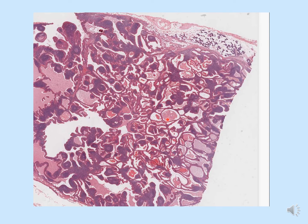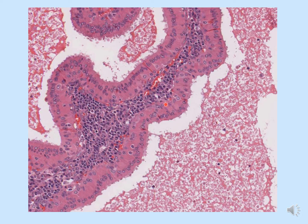Zooming in further, you can see the cystic spaces with empty space visible. Inside the cystic space is the eosinophilic coagulum, lined by the double-layer papillary cystic structures. These are aligned by the oncocytic epithelium and lymphoid stroma in between. The epithelial component consists of inner columnar and outer cuboidal cells, with the lymphocytic component forming the lymphoid stroma.